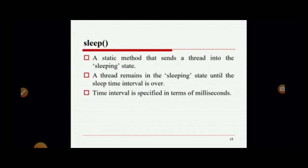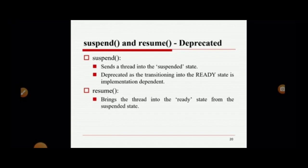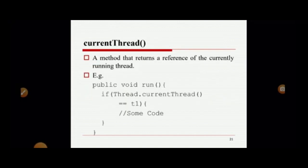The sleep() method is a static method that sends a thread into a sleeping state. A thread remains in the sleeping state until the sleep time interval — specified in milliseconds — is over. The suspend() method sends the thread to the suspended state, and the resume() method brings it back to the ready state. The currentThread() method returns the reference of the currently running thread, allowing you to check which thread is running. The join() method waits for the thread to terminate.